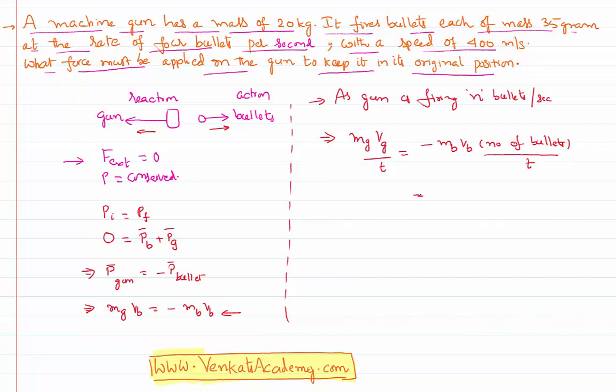Now, I know the mass of the bullet as 35 grams, which is 35 times 10 to the power minus 3 kilograms, velocity of the bullet as 400 meters per second given,